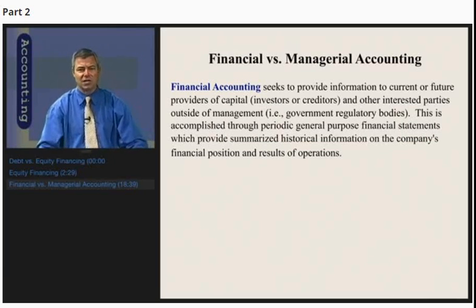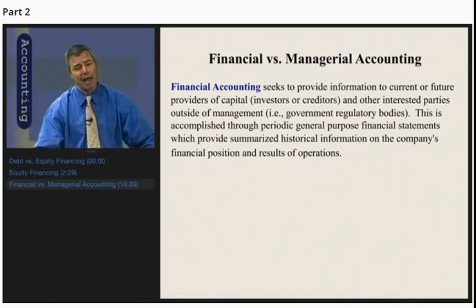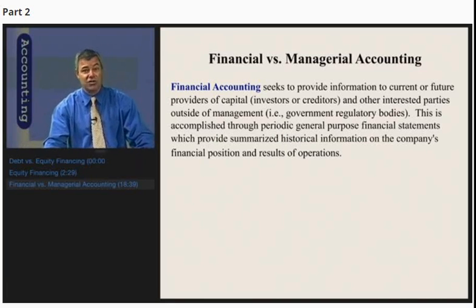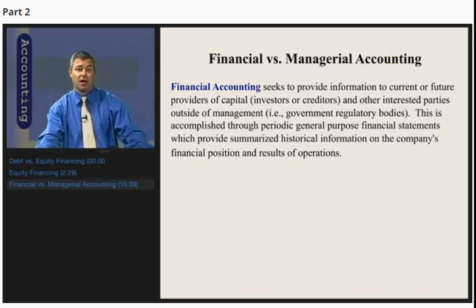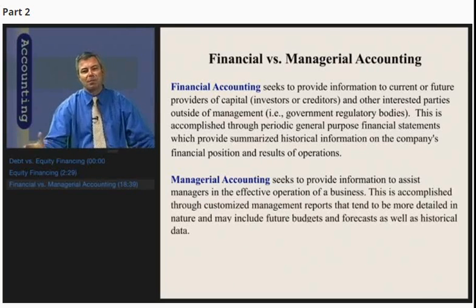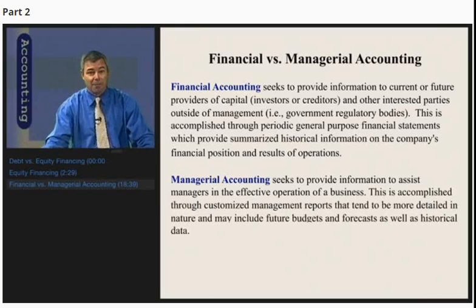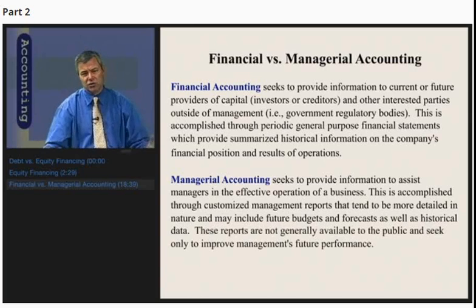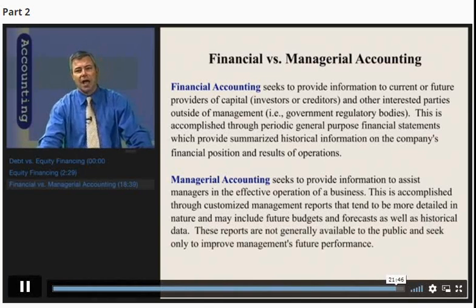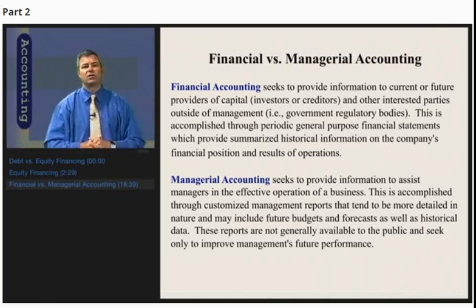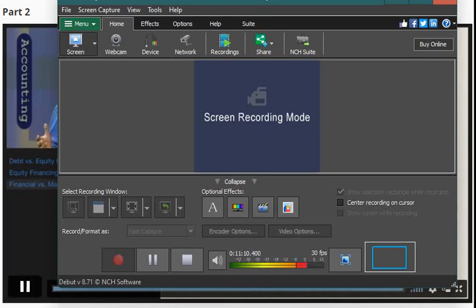We'll be focusing on financial accounting for roughly the first two-thirds of this class — these general purpose financial statements required for investors, creditors, and government regulatory bodies. Managerial accounting will be covered in the last third. Financial accounting seeks to provide information to current or future providers of capital — investors, creditors, and government — who are external to daily management and view the business in a more passive way. Managerial accounting, by contrast, seeks to provide information to those internal to the business to assist managers in effective operation, accomplished through timely, customized, often daily management reports that include budgetary forecasted information. These internal reports are not generally available to the public.